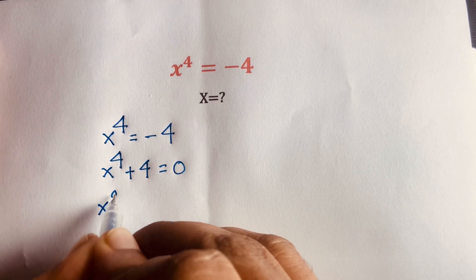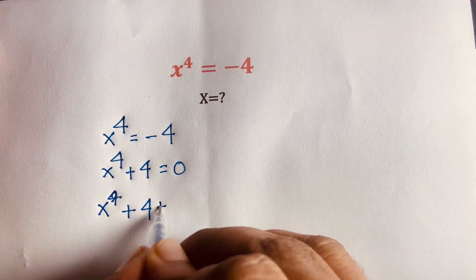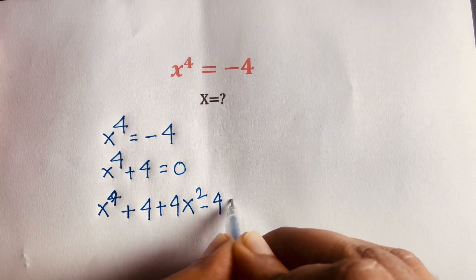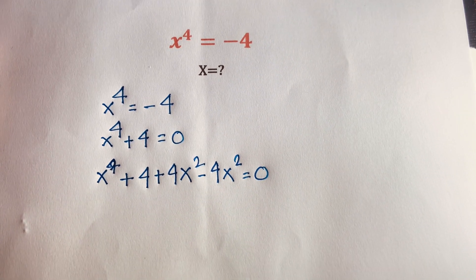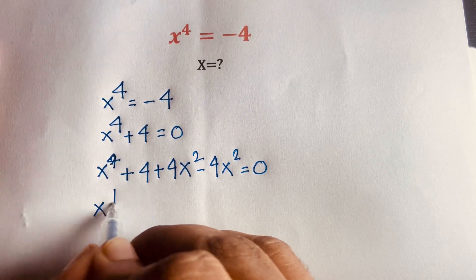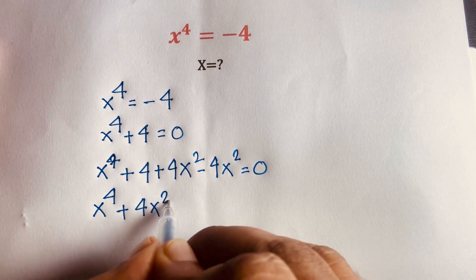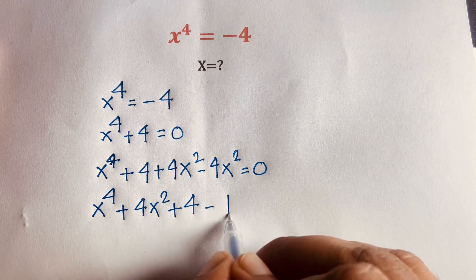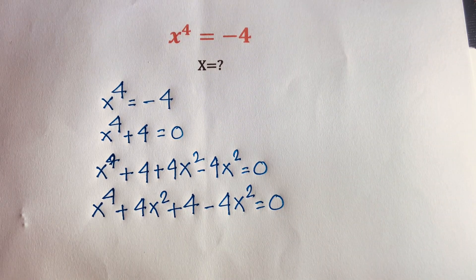To factor this, I add 4x² and then subtract 4x² — which leaves the equation unchanged. So this equation becomes x⁴ + 4x² + 4 - 4x² = 0.